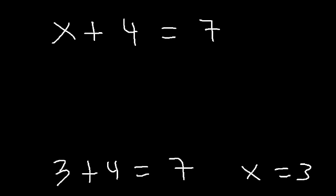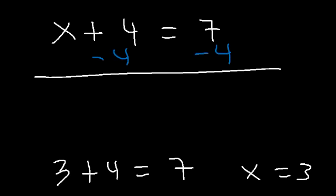But now what process must we use to solve for x? Whenever you want to solve for x, you need to get x on one side of the equation by itself. So you need to move the 4 from the left side to the right side. Notice that the x and the 4 are separated by addition. The opposite of addition is subtraction, so you need to subtract both sides by 4. 7 minus 4 is equal to 3, therefore x is 3.